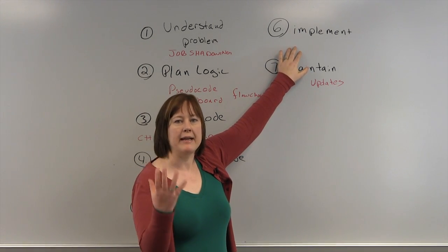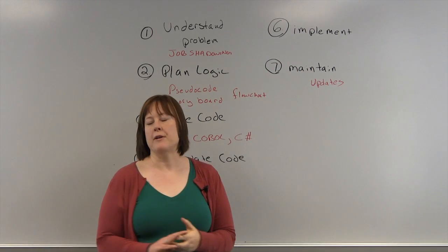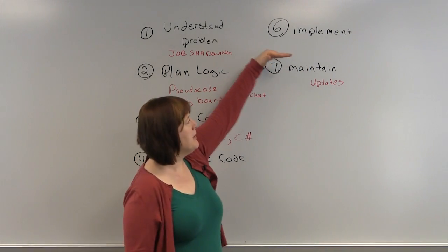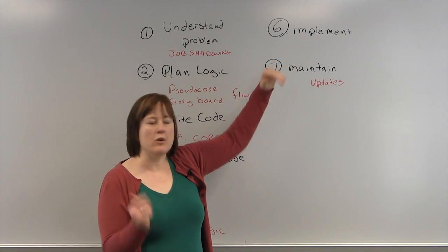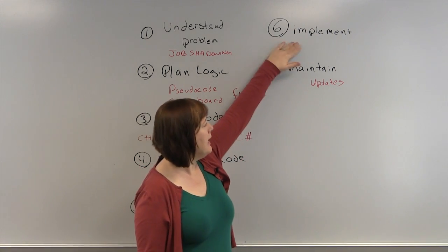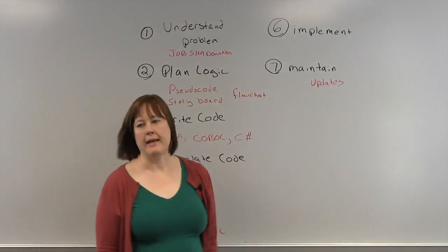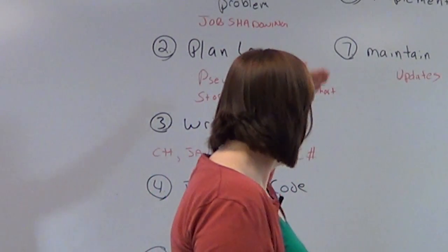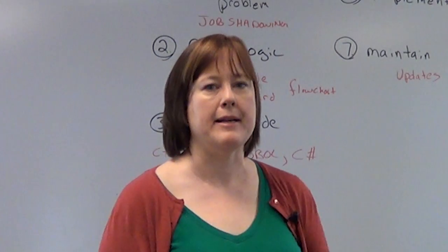That takes you out to where you might start by doing an alpha test where people will test it. You will usually implement it by running it alongside of the older process, test it, and get it out there. And then you maintain it. In the maintenance phase you will probably come through and go through the entire cycle again to add in updates.